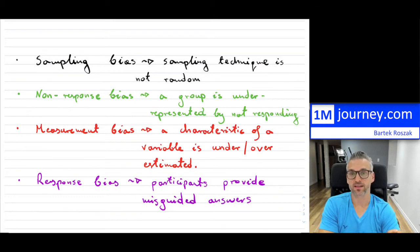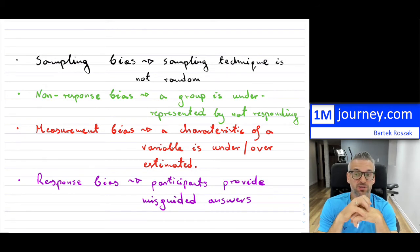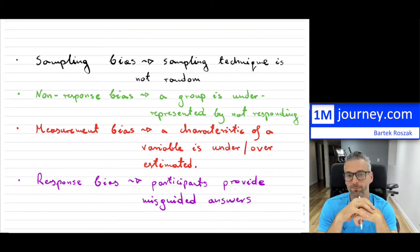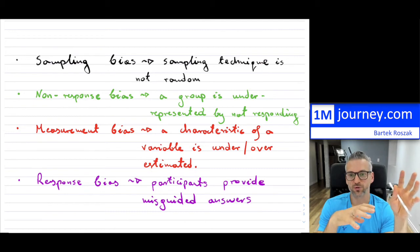Another kind of bias that you have within surveys is called a non-response bias. This is where a group is underrepresented by simply not responding. You may create a question where the people that you're collecting the data from simply just are not interested in that particular question and they may not respond.